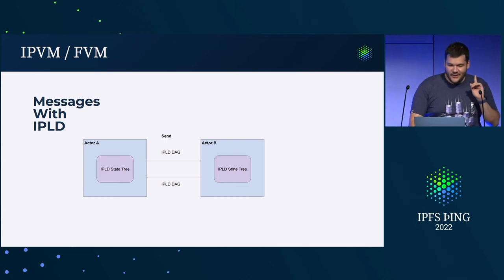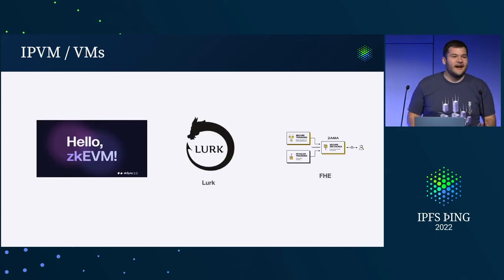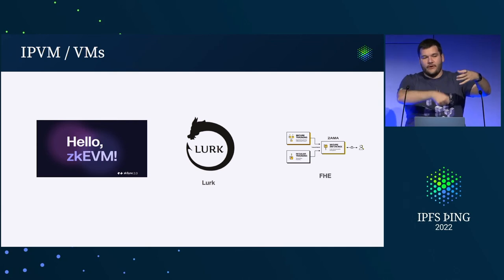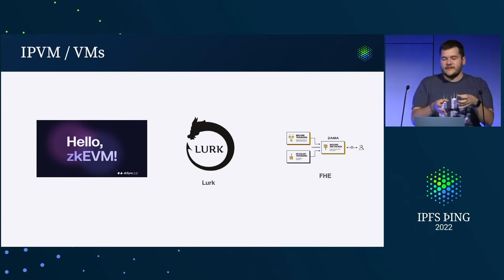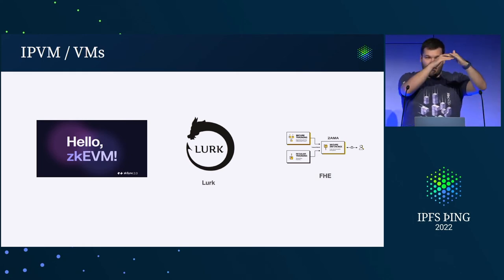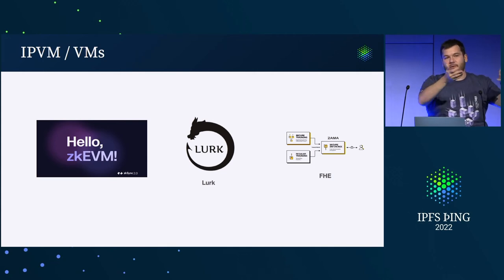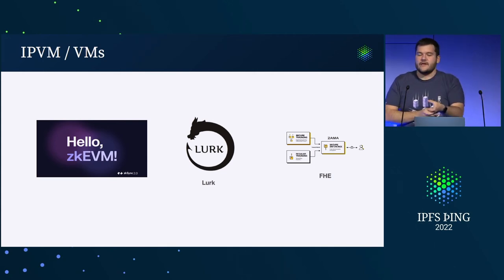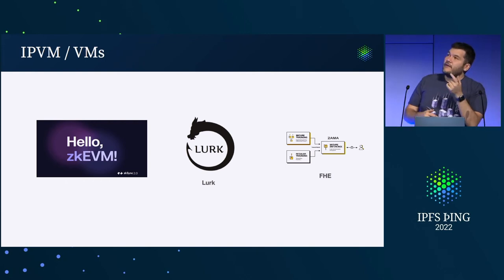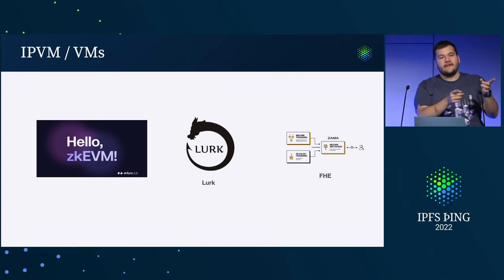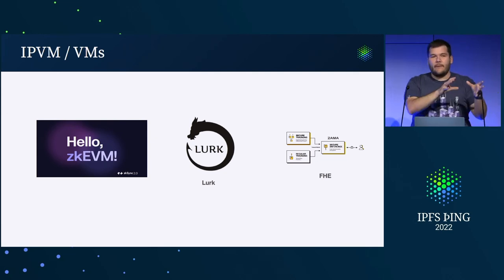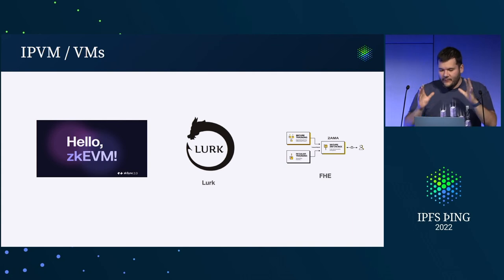Look at the Fluence/Aqua distributed programming language because you want to be able to express programs in one file that end up running in multiple machines. We want content addressing, so maybe the Aqua VM can learn to have IPLD, which would be pretty sweet, and could become a really good substrate. Also, capabilities — the Aqua VM also needs capabilities. Think of syncing capabilities into the VM itself; the full OCAP model there would be great.